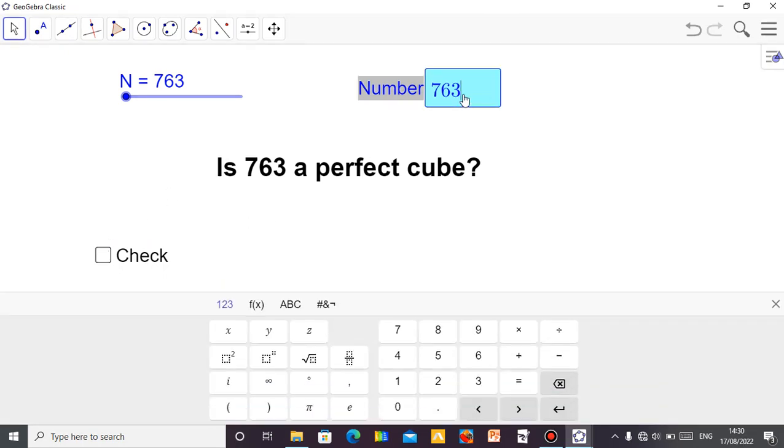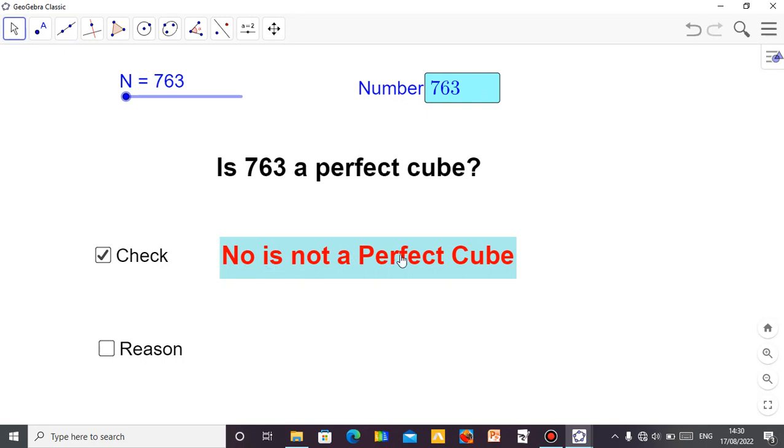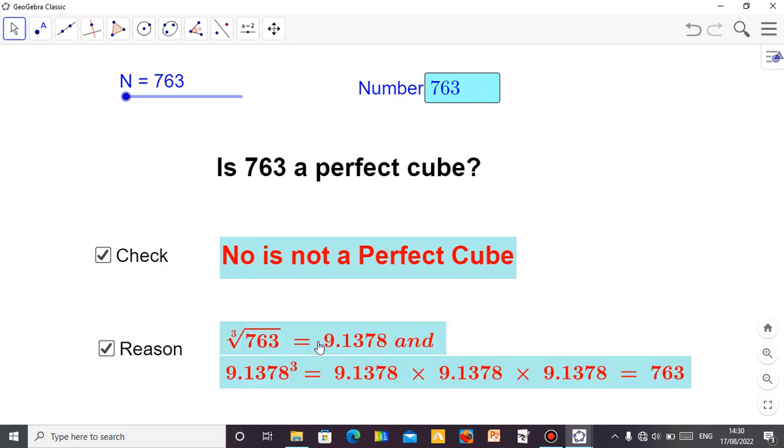Then if you check 1000, 1000 is 10 times 10 times 10, so 1000 is a perfect cube. Let me undo that. Okay, so let's check. No, it's not a perfect cube, because if you find the cube root, it gives you a decimal, and we don't need a decimal.